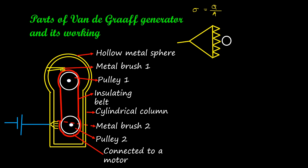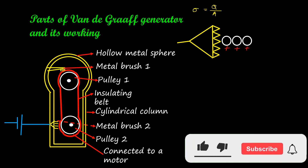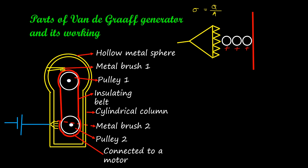Ionization means this high potential pushes electrons from inside the atoms of the air particles, and the atoms or molecules become positively charged. The first layer of atoms in the air gets positively charged, then the next layer, and subsequent layers also get positively charged. Finally, this potential pushes electrons away from the dielectric belt, and particles of the dielectric also lose electrons due to this high potential and get positively charged.